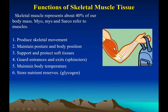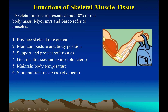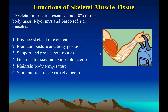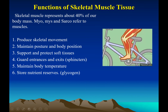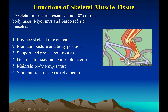Muscles are very important for body posture and body position. They protect all the soft internal organs — for example, the muscles of the abdomen protect the liver, spleen, and all the delicate organs in the abdominal region. They guard entrances and exits through circular muscles called sphincters. Because cellular respiration occurs in muscles, they play a huge role in maintaining body temperature, and they also serve as storage for nutrients like glycogen, fat, and some minerals.